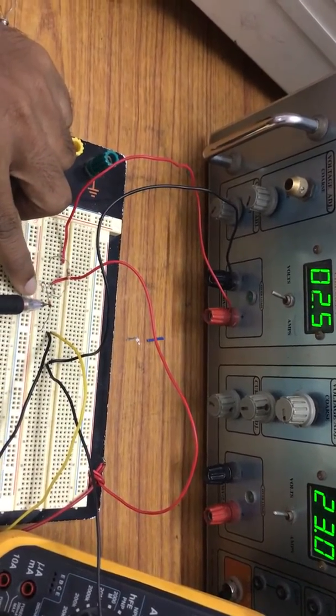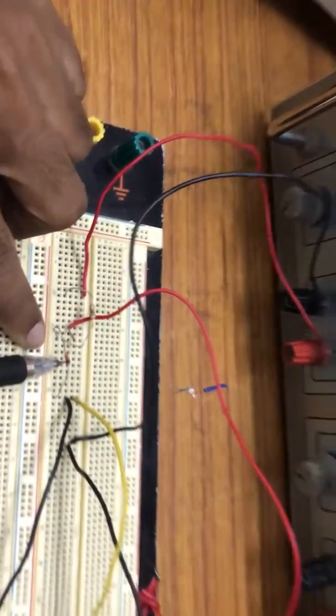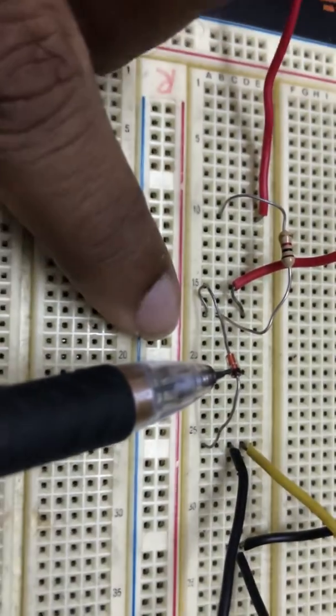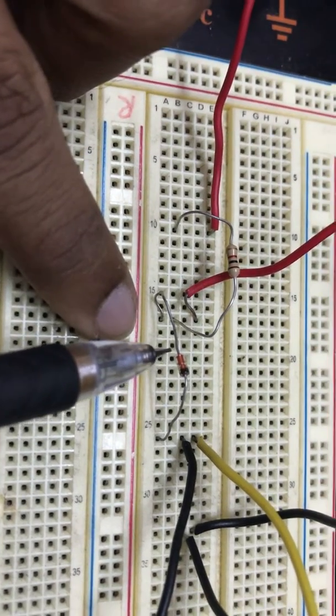To identify the anode and cathode of the Zener diode, there is a black end which is the cathode. One end of your diode will be black color, that is your cathode, and the other end will be the anode.